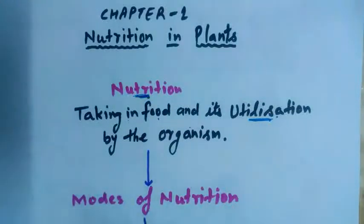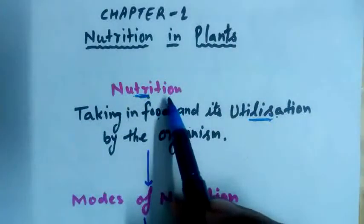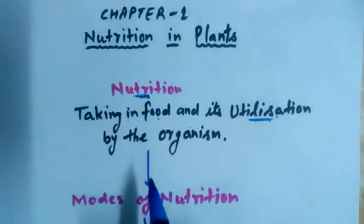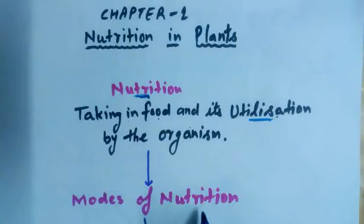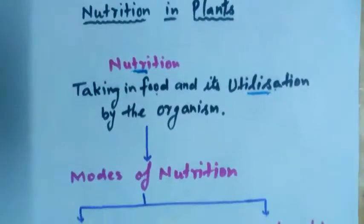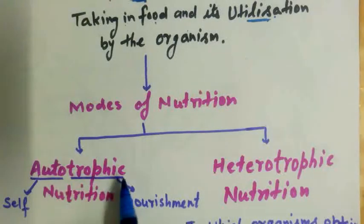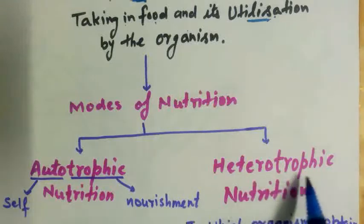Now, nutrition is of two types — we can say modes of nutrition. The modes of nutrition are of two types: autotrophic nutrition and heterotrophic nutrition.